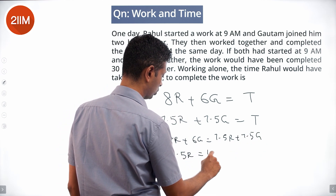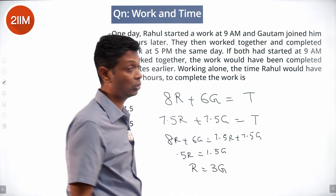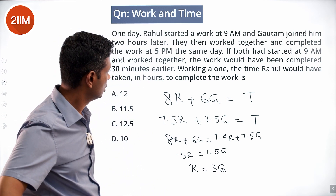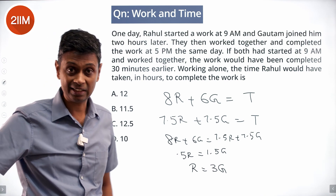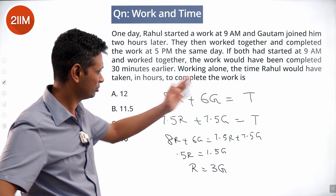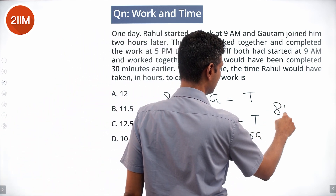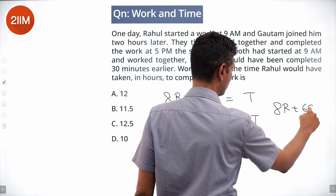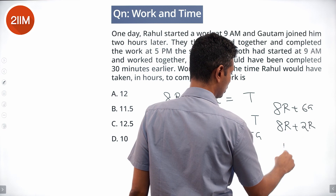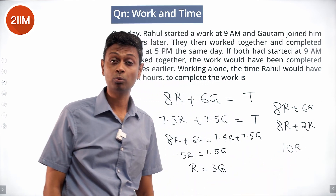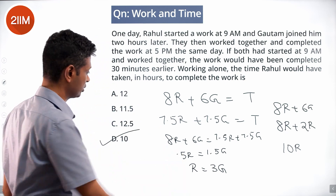Solving: 0.5R equals 1.5G, so R equals 3G — Rahul is thrice as good as Gautam. Working alone, substituting back: 8R plus 6G equals 8R plus 2R (since 6G is 2R), giving 10R. So 10 times Rahul's output per hour completes the task, meaning Rahul alone would take 10 hours to finish.